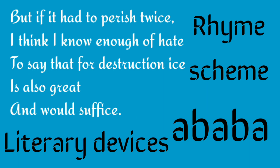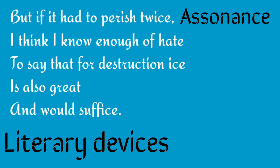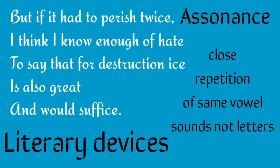Then we have assonance. Assonance is a close repetition of the same vowel sounds within a group of words. It occurs when vowel sounds — not letters — are repeatedly used in a line. For example, 'But if it had to perish twice' — here the sound of I is repeated, which makes the line soft and musical.